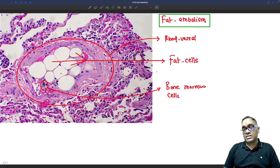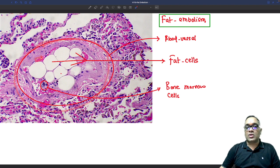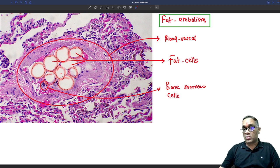How do we identify them on histopathology? When you see fat embolism, first you will notice blood vessels. You can see there is a lumen containing RBCs. This is a blood vessel. In this blood vessel, you are seeing so many empty looking cells. These are all fat cells which came from the bone marrow.